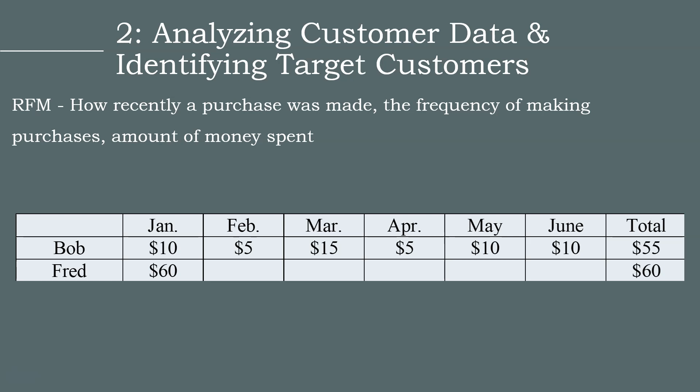Let's take a look at Bob and Fred, two customers of our hypothetical retailer. Bob spends $10 in January, $5 in February, $15 in March, and continues to spend money every month thereafter. While Fred spends $60 in January and nothing in the following months. When we add up the total amount spent over a six-month period, we find that Bob spent a total of $55, while Fred spent a total of $60.